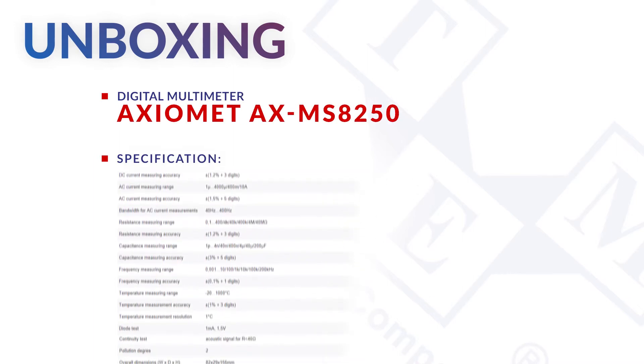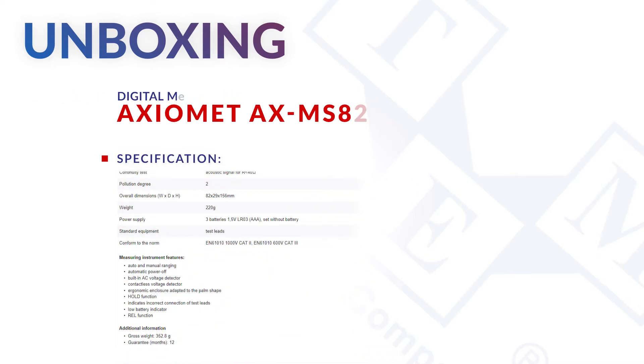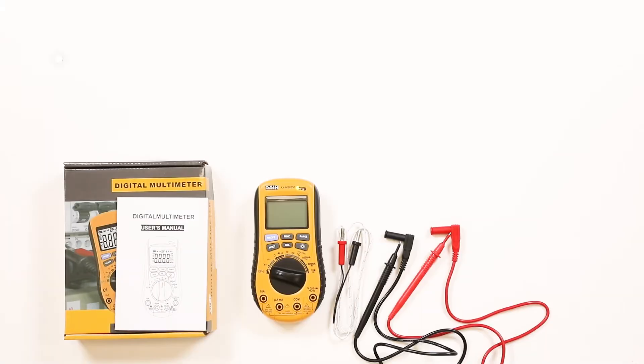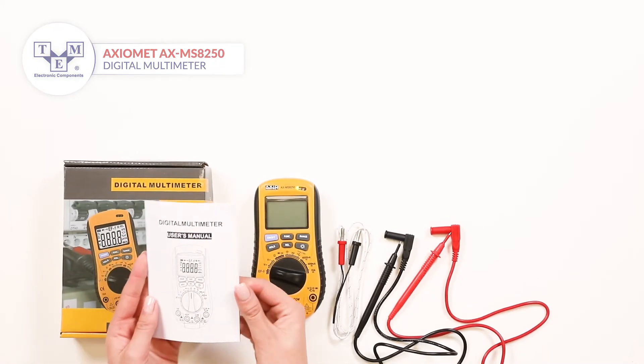The AXMS8250 is a digital multimeter that can measure AC and DC voltages and currents, capacitance, resistance, temperature and frequency.